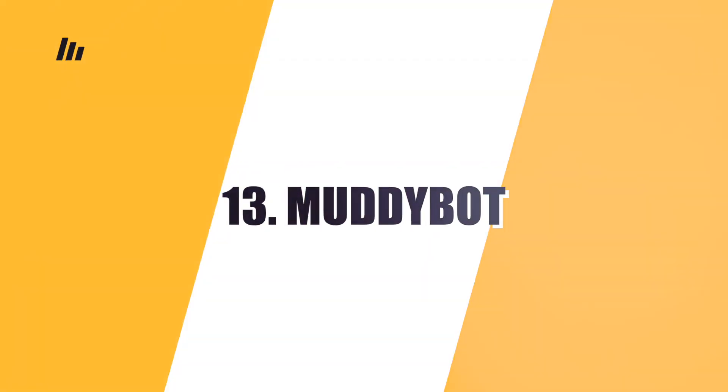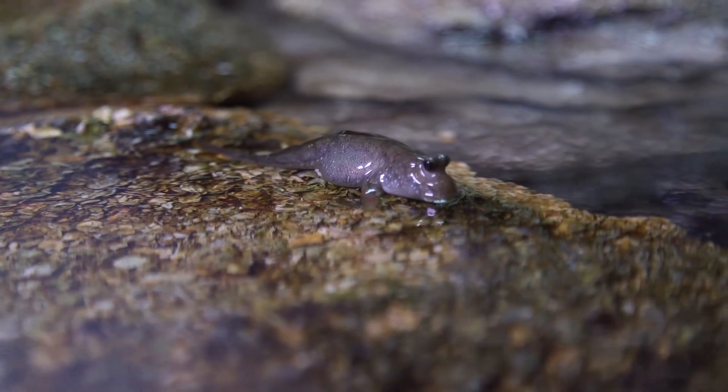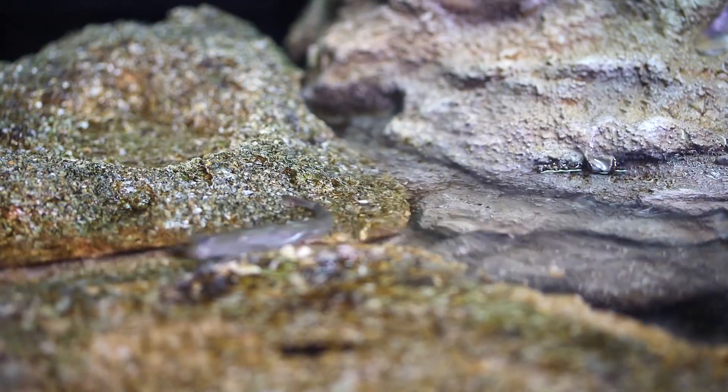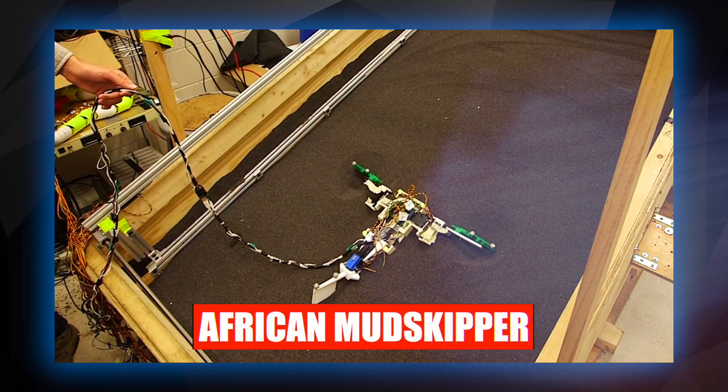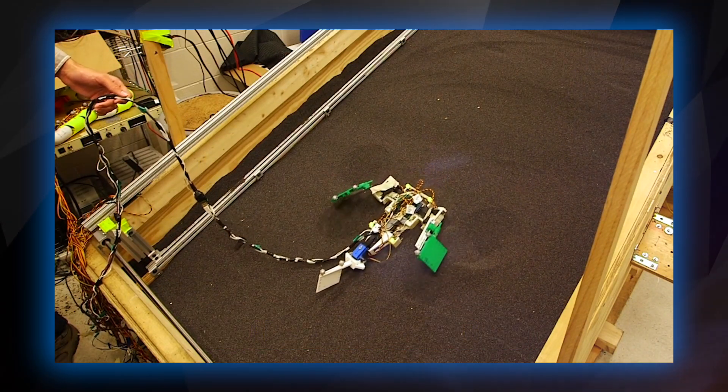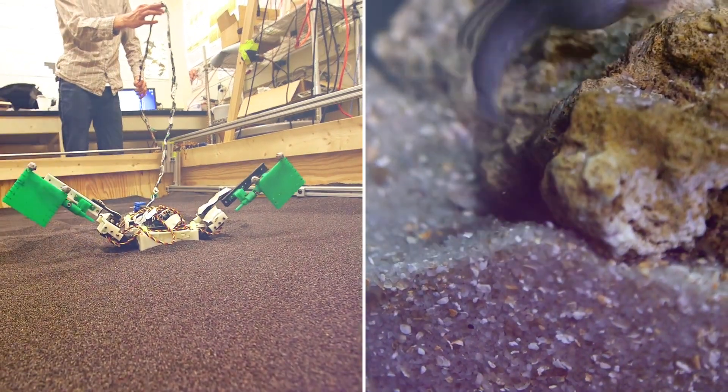Number 13: Muddybot. Georgia Tech biophysicist Daniel Goldman is tasked with developing a new generation of amphibious robots that can handle the most difficult surfaces, including flowing sand and slippery mud. Goldman turned to evolutionary science. He built a robot much like the African mudskipper, which spends its time on land and in water in a manner similar to early land vertebrates.